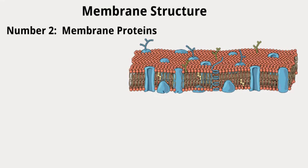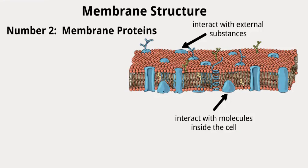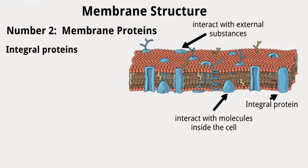Number two, membrane proteins. Membranes contain various proteins, and the specific proteins present can vary depending on cell type and organelle. These proteins have distinct orientations within the lipid bilayer — a property called membrane-sidedness. There are three main classes: (1) Integral proteins, which penetrate and span the entire lipid bilayer, with portions protruding into both extracellular and cytoplasmic sides. Some have a single membrane-spanning segment, others have multiple spans. Genome studies suggest integral proteins make up around 25–30% of all encoded proteins and are targets for about 60% of current drug development efforts.